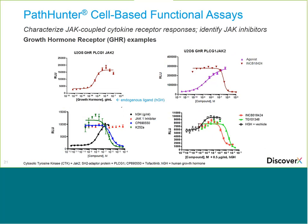The next cytokine receptor example is the growth hormone receptor, which uses JAK2 as its CTK and PLC gamma-1 as the adapter protein. Small molecule inhibitors are shown in the plots. A negative control JAK1 inhibitor at the lower left gives no response, confirming the specificity of the JAK2-dependent signal, while the other inhibitors show nice dose-dependent inhibition curves sloping downward.